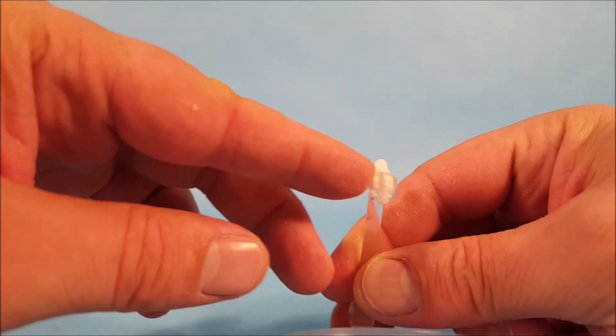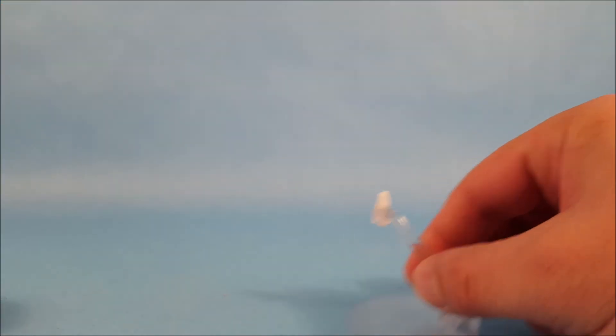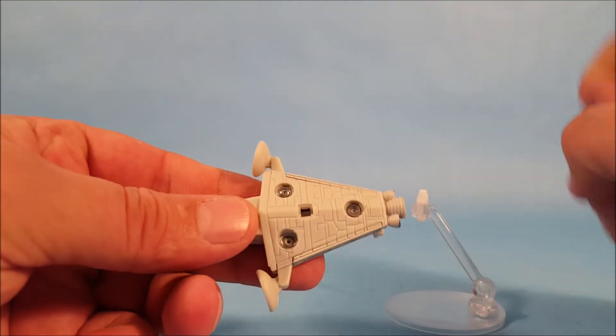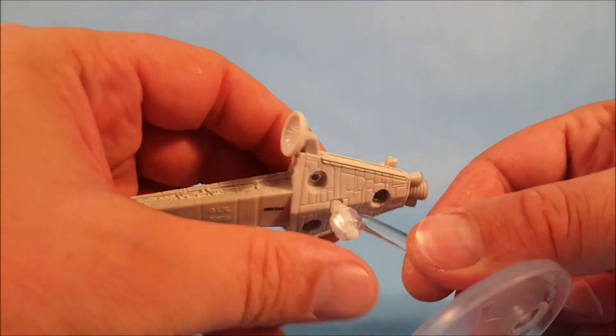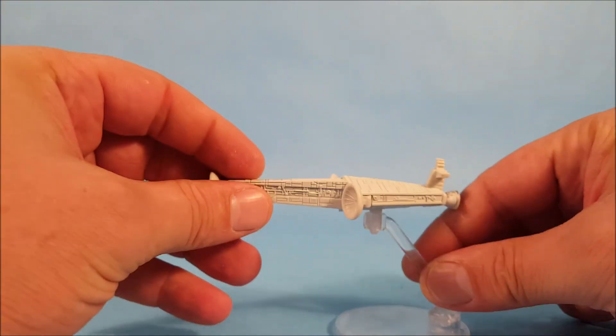And then you'll see there's a little white tab at the top here. And so you want to line that up with the square hole on the bottom of the ship here. And it should snap right in. And there you go.